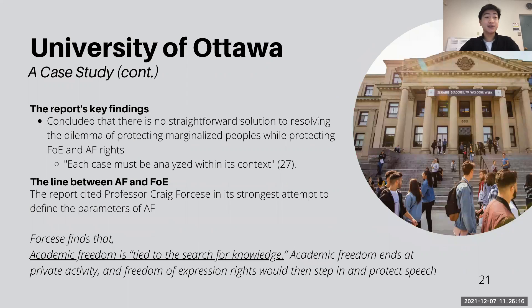Further findings included the concession that there is no straightforward solution to resolving the dilemma the university faced — each case must be analyzed within its context. However, the report, when attempting to define the line between academic freedom and freedom of expression, did not take an authoritative stance and did not list how the university itself defined this delineation. Instead, it cited other cases, professors, and faculty members and their respective views on academic freedom and freedom of expression.